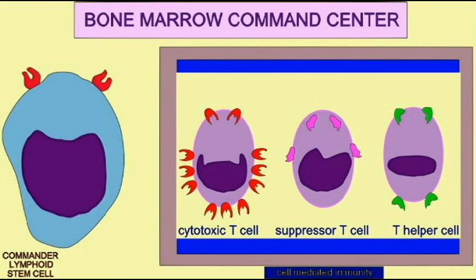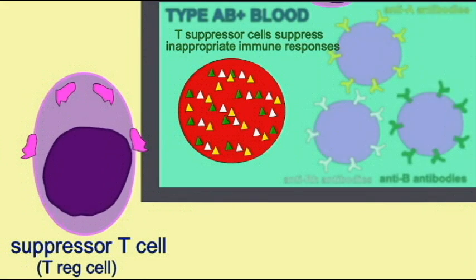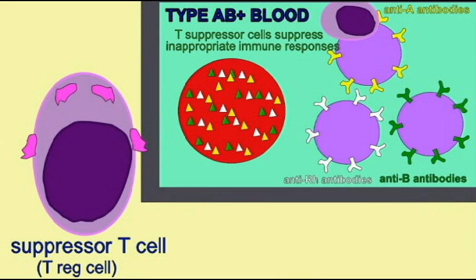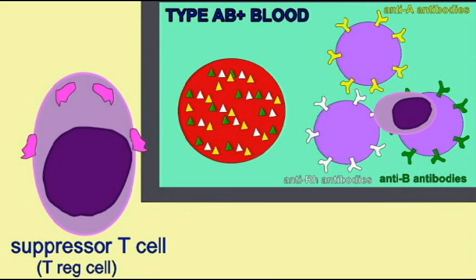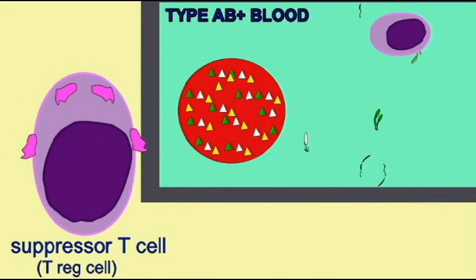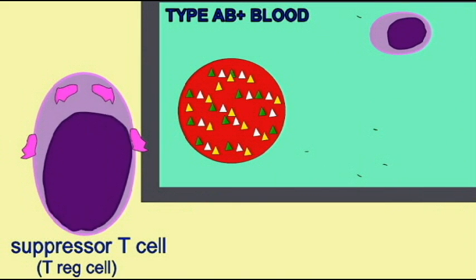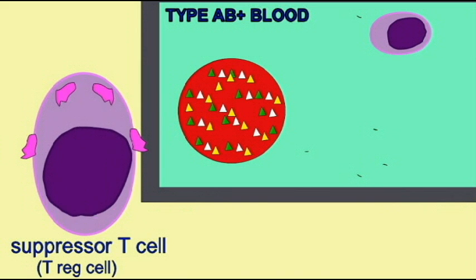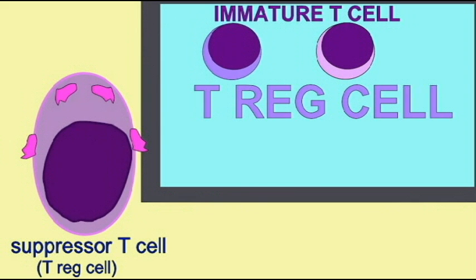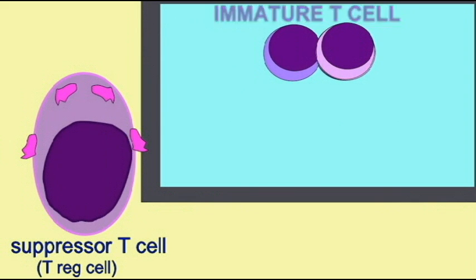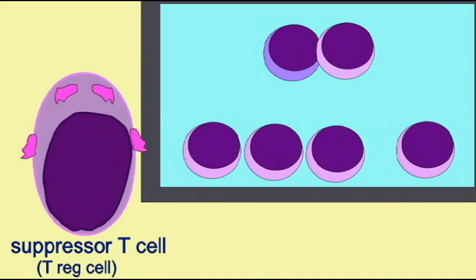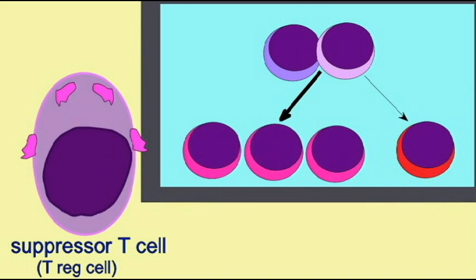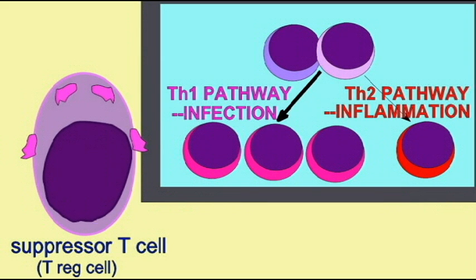Suppressor T cell, what is it that you do? As a suppressor T cell, also known as a Treg cell on occasion, I help regulate the immune responses of a body. I can suppress cells that should never see action. If a cell is going to react against self — in other words, if an immune cell is going to attack a cell of their own body — I inactivate it. I also help cells mature and develop appropriate responses. So I have a lot of regulatory functions.